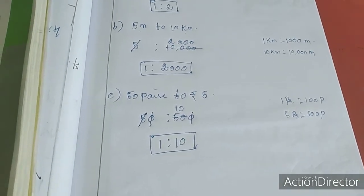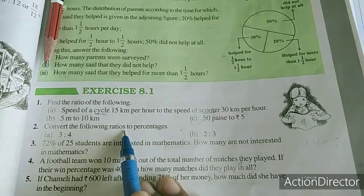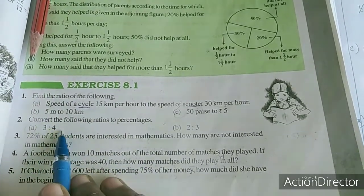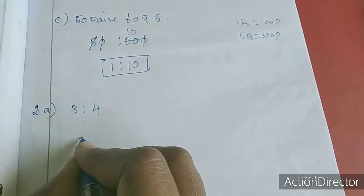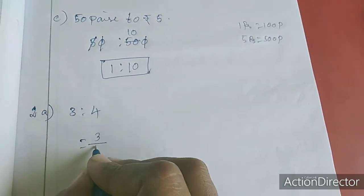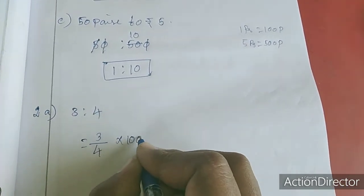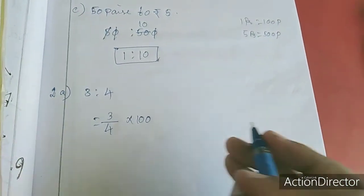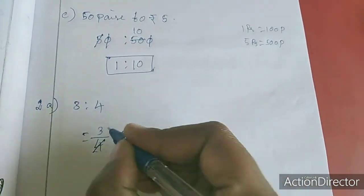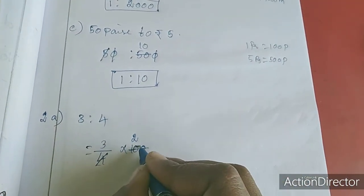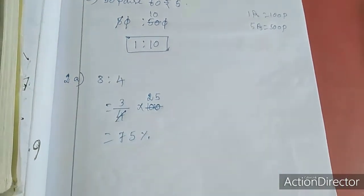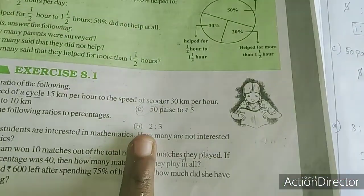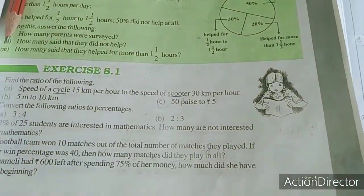Now we will move to the second sum. Convert the following ratios to percentage. First we have to convert this ratio to percentage. See here, this is the ratio, so for converting you have to write 3 by 4 into 100. If you multiply 100 means it will become a percentage. 1 times 4 is 4, 2 times 4, 8 carrying 2 is 5. So 3 times 25, 75. So the percentage is 75 percent. Like this you have to work out for B sum.